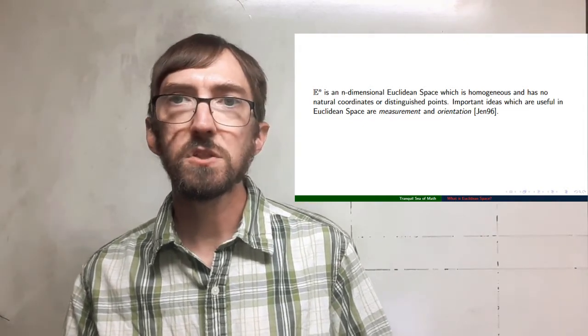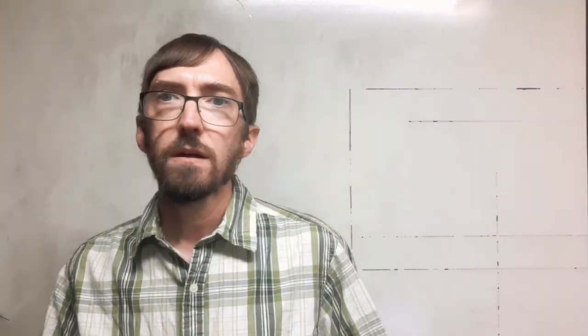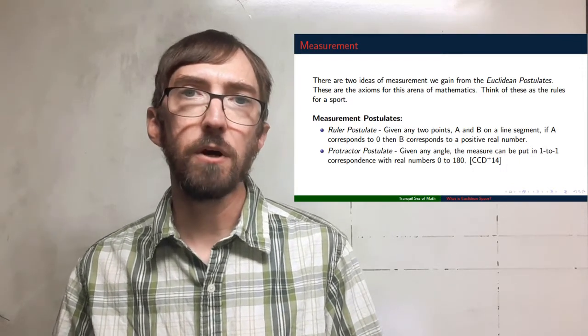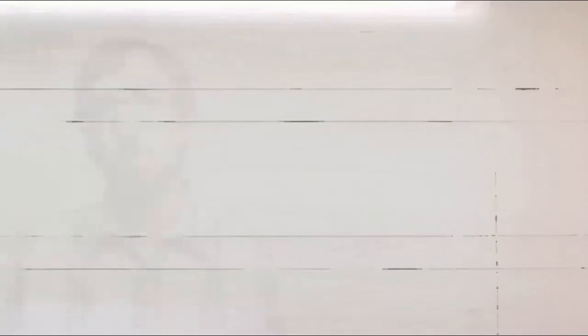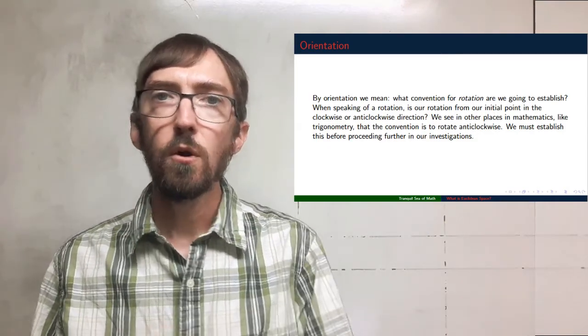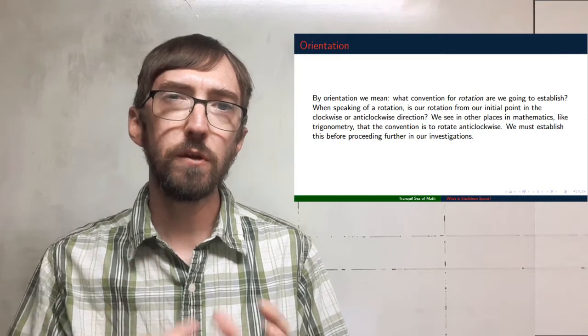Important ideas in Euclidean space, as identified by Jennings, are measurement and orientation. For measurement, we immediately draw from two postulates in Euclidean geometry: a ruler postulate and a protractor postulate. These allow us to measure linear distances and angles — as we see with the degree measurement alignment in this postulate from the textbook. For orientation, we're talking about rotation: whether it be rays opening to give us an angle, moving around a circle, or turning an object — we need to define a baseline direction.